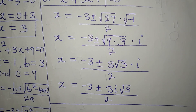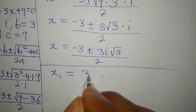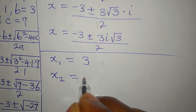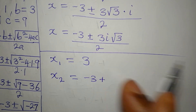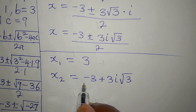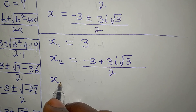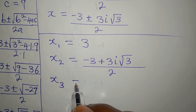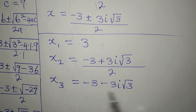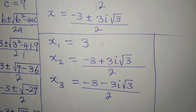Now let's get the three solutions. The first solution, x₁, is 3. The second solution, x₂, is minus 3 plus 3i root 3, all over 2. And the third solution, x₃, is minus 3 minus 3i root 3, divided by 2. So these are the three solutions to the equation.